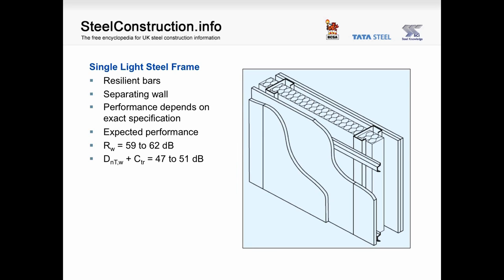This wall is also suitable for separating walls in a dwelling, but consists of only one light steel frame with insulation between the vertical studs and two layers of plasterboard on each side. However, this wall incorporates a resilient bar, specially designed to reduce the passage of sound across the wall. Based on typical specifications, an RW of between 59 and 62 can be expected, and a DnT plus CTR of between 47 and 51 dB.